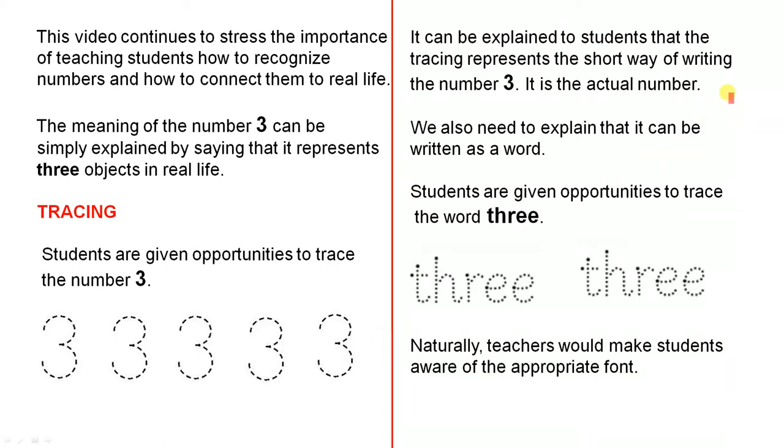It can be explained to students that the tracing represents the short way of writing the number 3. It is the actual number. We also need to explain that it can be written as a word. Students are given opportunities to trace the word three.